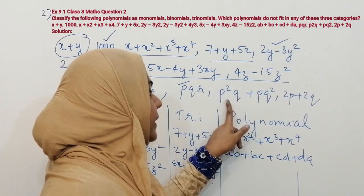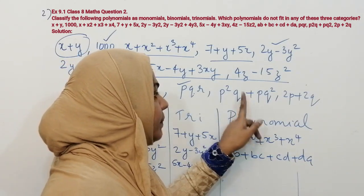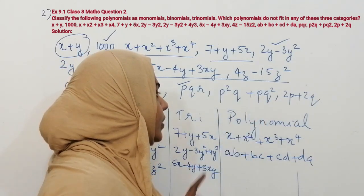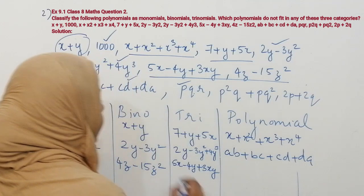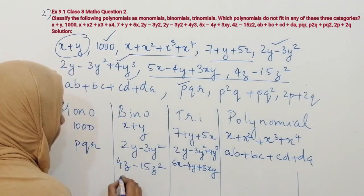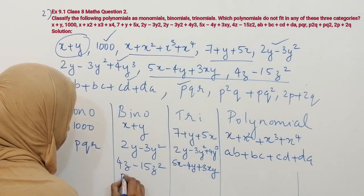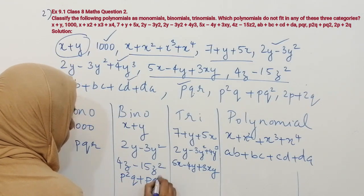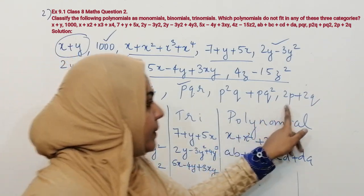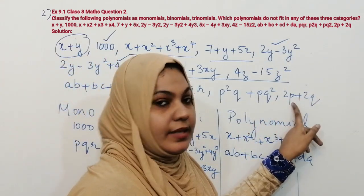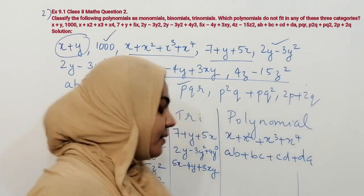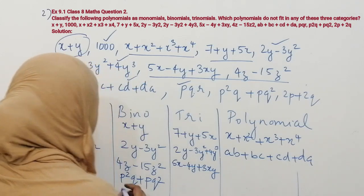The second-last one is p squared q plus pq squared. It has two terms, so it is a binomial. The last one is 2p plus 2q — it also has two terms, so it is under binomial.